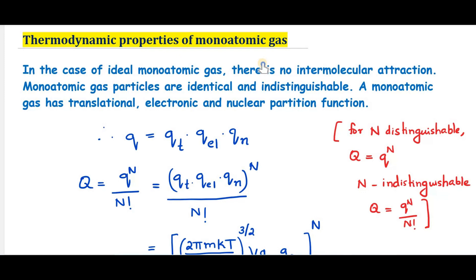But according to the Born-Oppenheimer approximation, the translational energy is independent of the electronic and nuclear energies. And hence, it is possible to treat these three energy states independently. So the total energy will be the translational energy plus electronic energy plus nuclear energy. Therefore, a monoatomic gas has translational, electronic, and nuclear partition functions. The total partition function Q may be expressed as the product of these three: QT × QEL × QN, where QT is the translational partition function, QEL is the electronic partition function, and QN is the nuclear partition function.